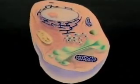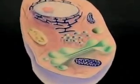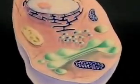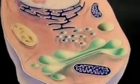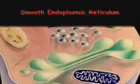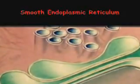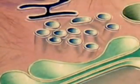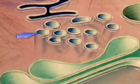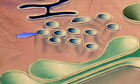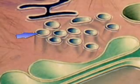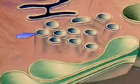Another type, called smooth endoplasmic reticulum, has no ribosomes attached to its surface, and thus appears much smoother than rough ER. Like rough ER, smooth endoplasmic reticulum serves as a storage area, mainly for proteins that will later be exported out of the cell.